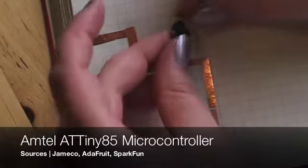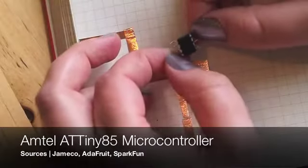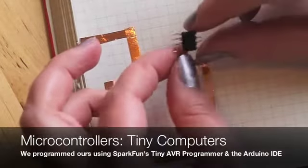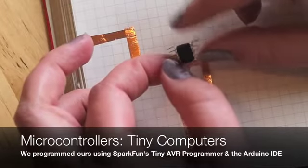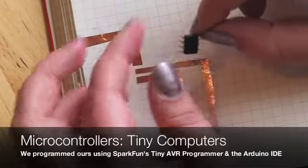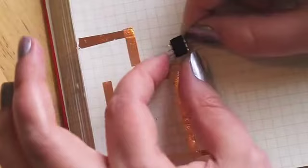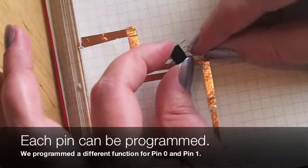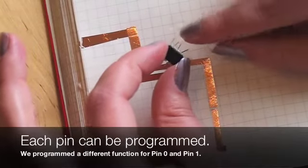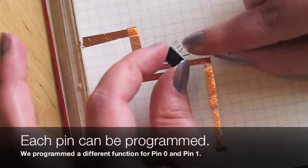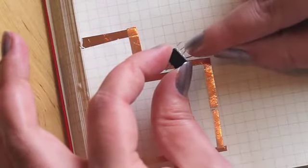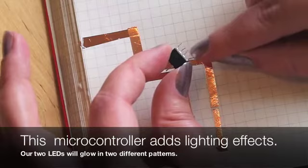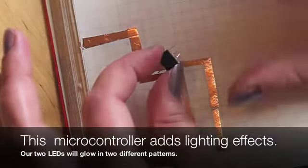So what I have here is an ATtiny85 that I've already programmed with two different functions. An ATtiny85 is a little microcontroller from Atmel, and you can see that it's got eight different pins. Some of these pins you can program to do different things. We're going to use two pins - pin 0 and pin 1. They both have different functions that will change how electricity goes through, and it's going to give us a little blinking effect with a light.